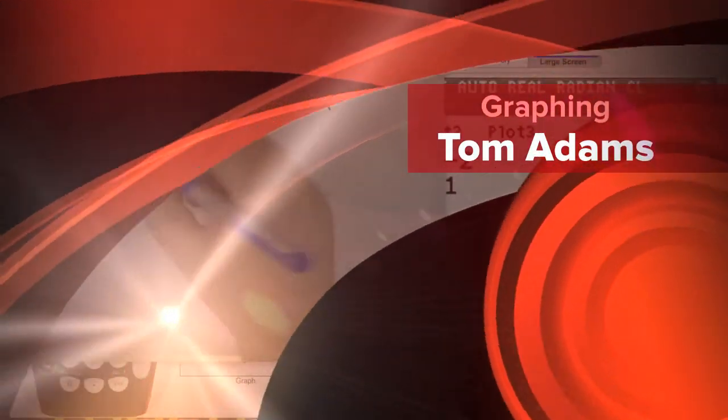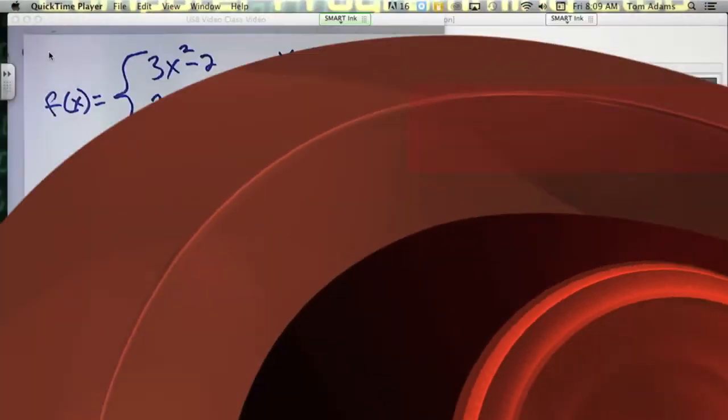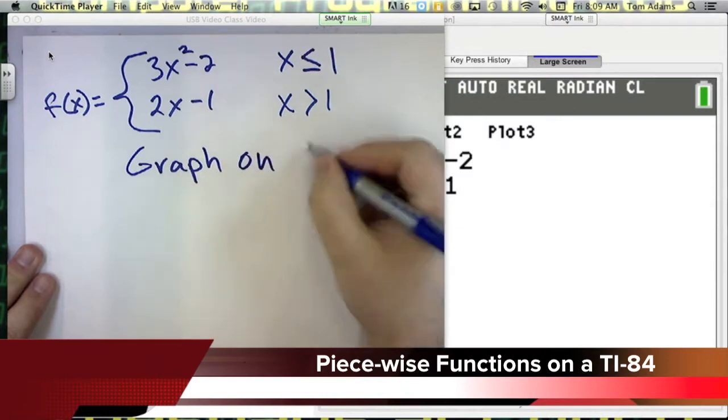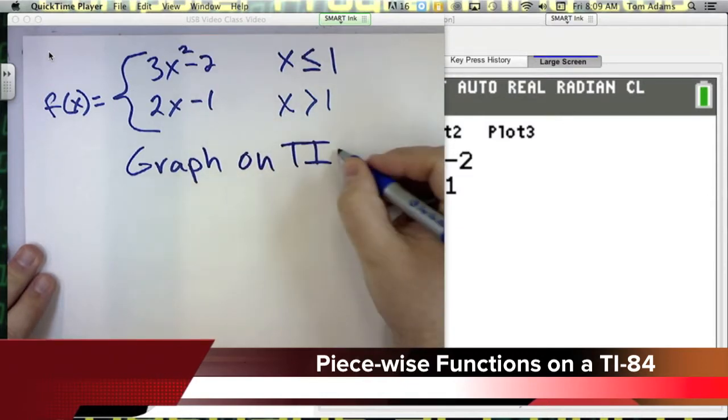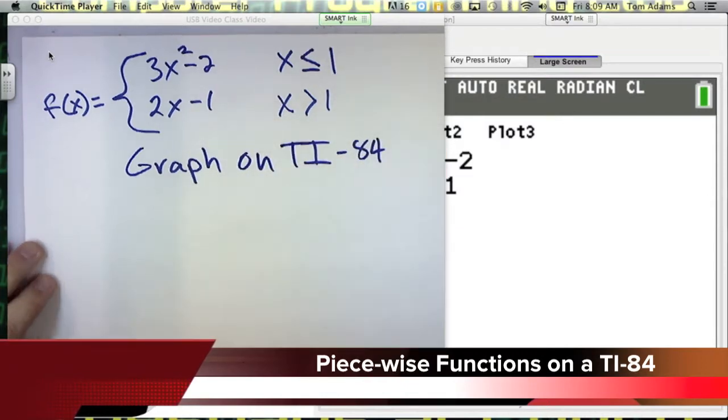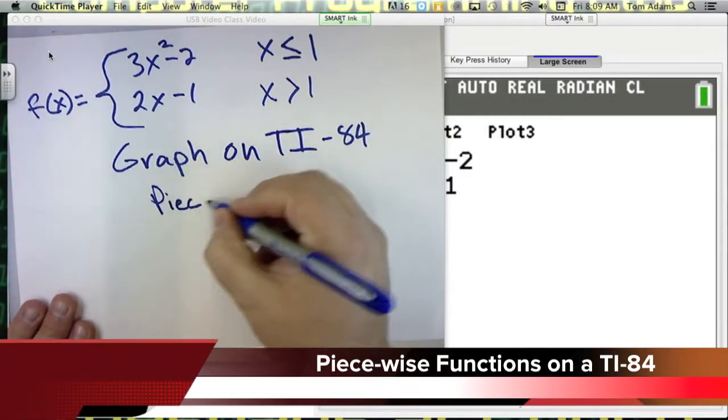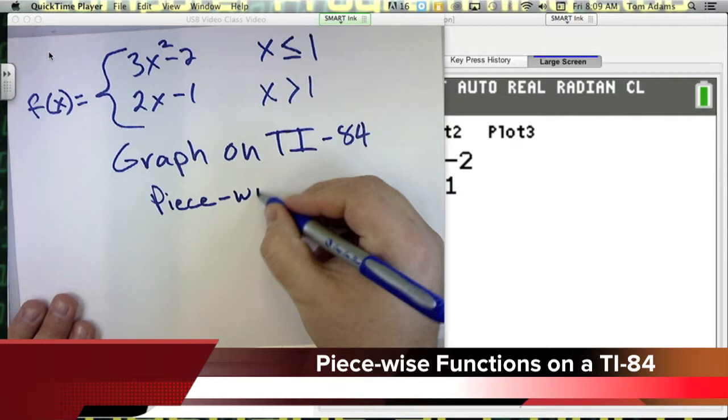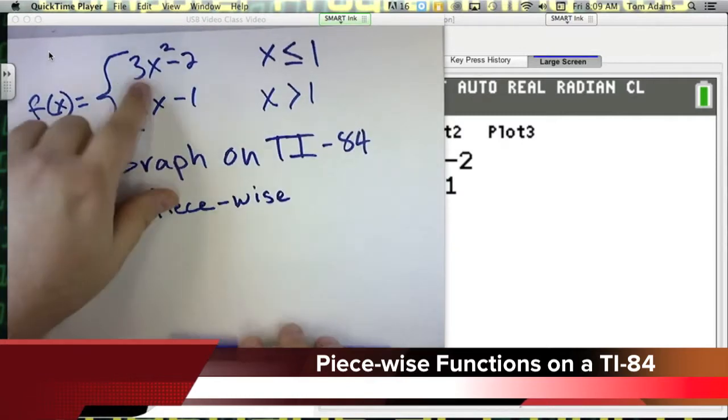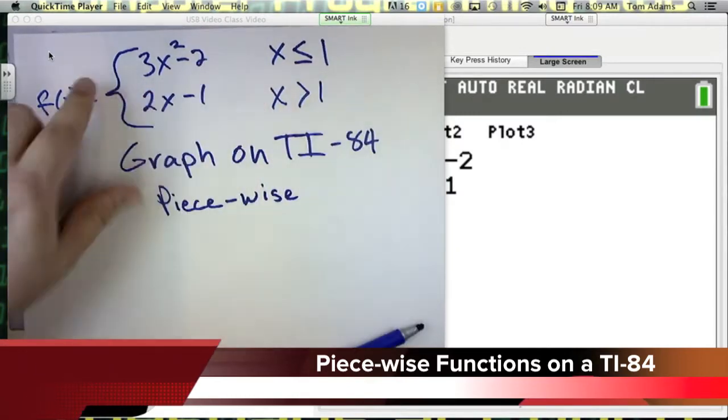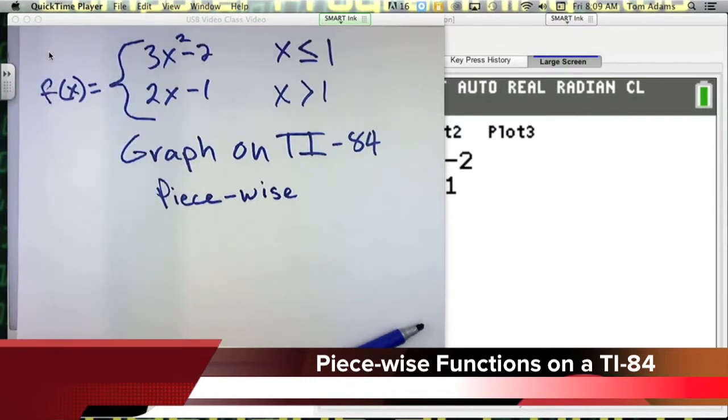What we want to do is figure out how to graph this thing on a TI calculator. This is what we call a piecewise function, because as you can see here, for different parts of the domain of X, we have different graphical representations.